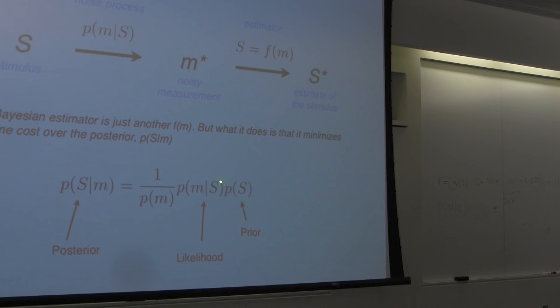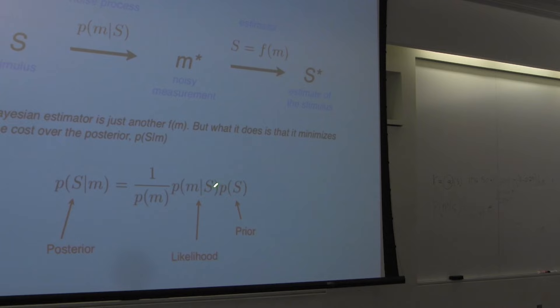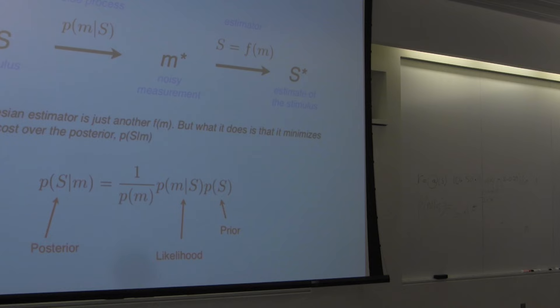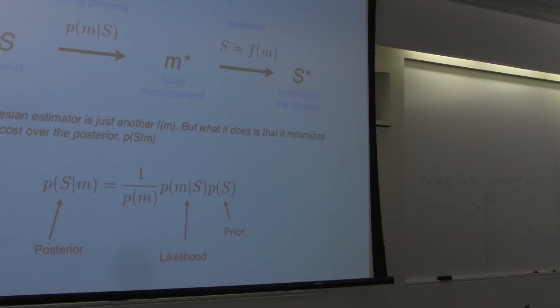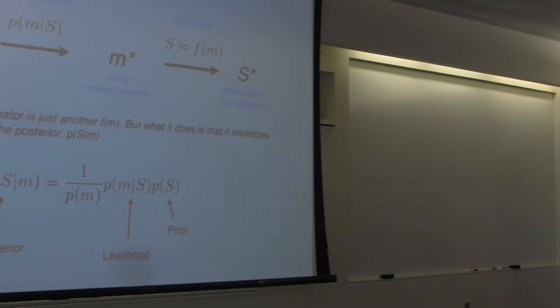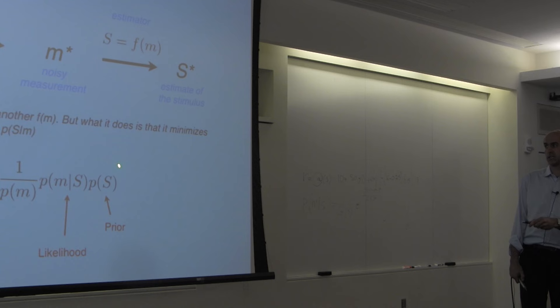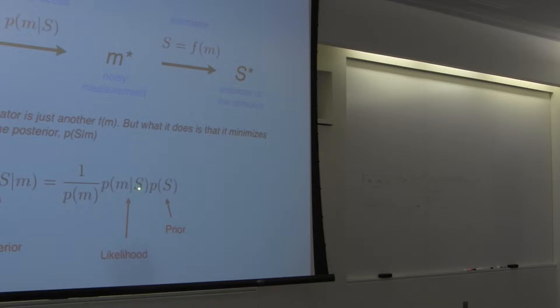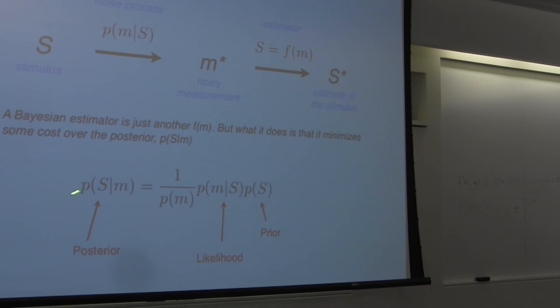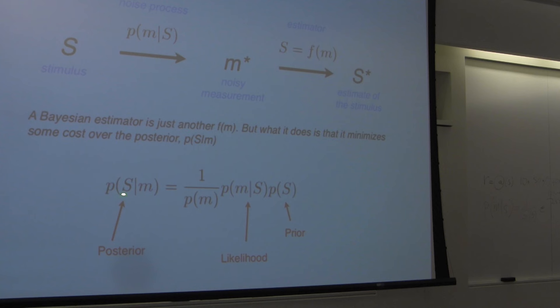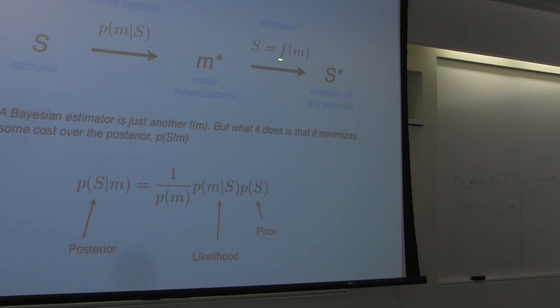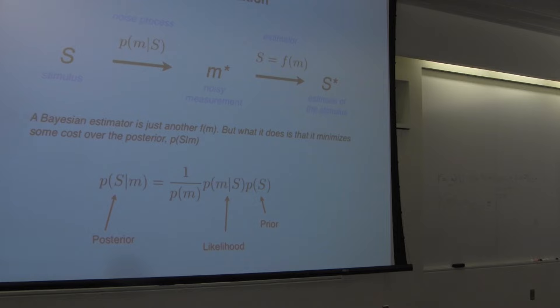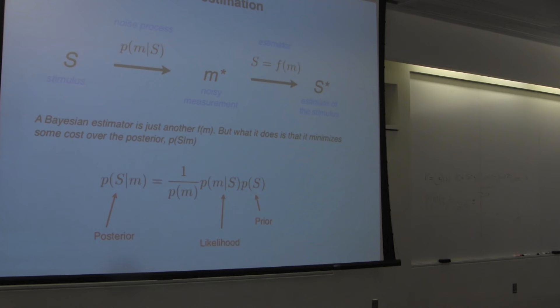In the case of the medical test, the prior is 98% no disease, 2% disease. When you multiply these two, out comes the probability of the stimulus given the measurement — the posterior. And this is really what we want. What the brain wants ultimately is to know what is the stimulus given the neural activity. The brain knows the neural activity and wants to figure out what is out there in the world. So the posterior is the probability the brain wants to work with.